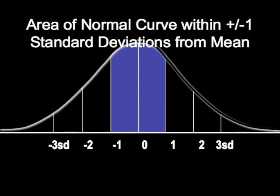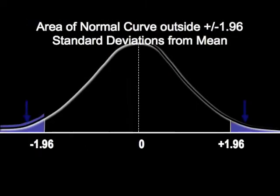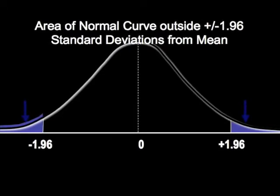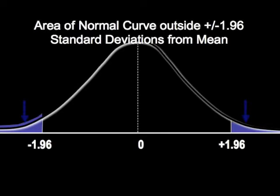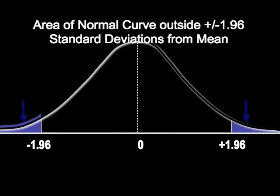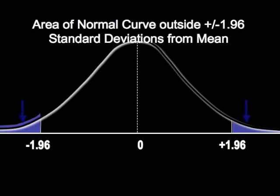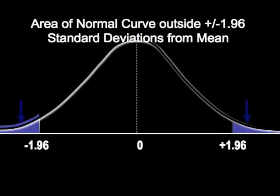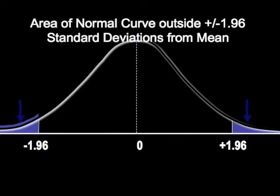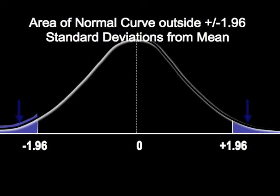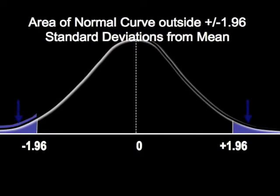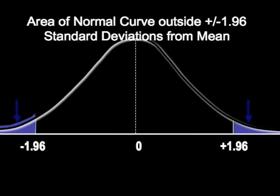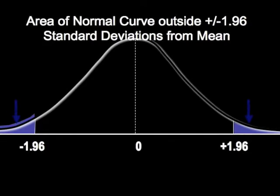which is contained in Appendix A. That table also reveals that 95% of cases in a normal distribution fall within plus or minus 1.96 standard deviations from the mean. In other words, only 5% of cases fall greater than approximately two standard deviations from the mean. This idea will be used extensively when we discuss confidence intervals and hypothesis testing.